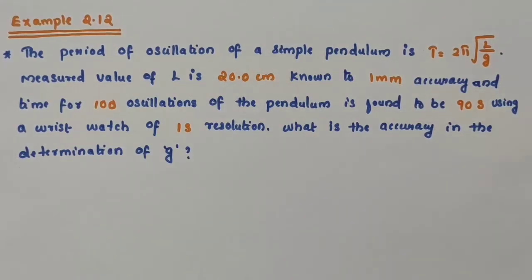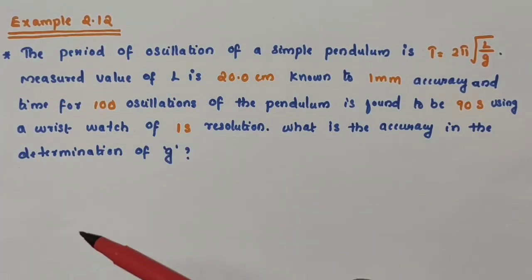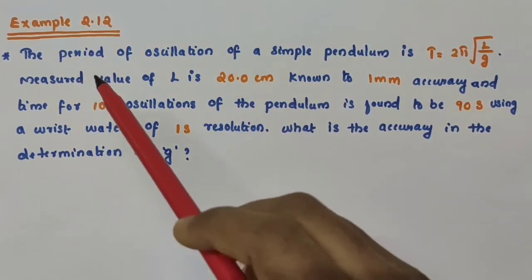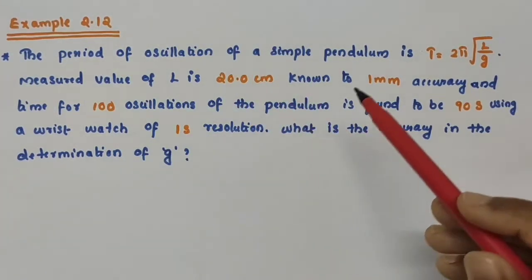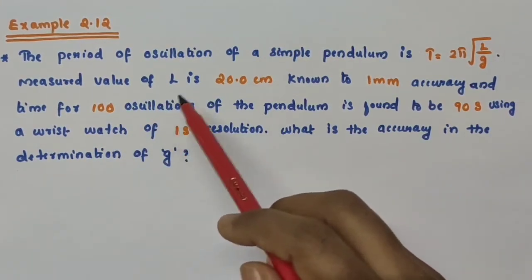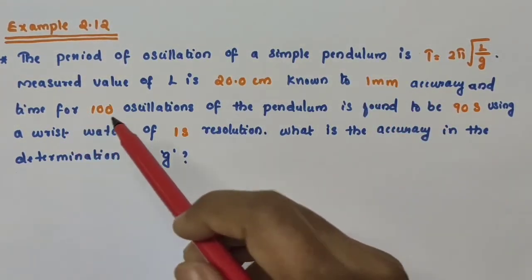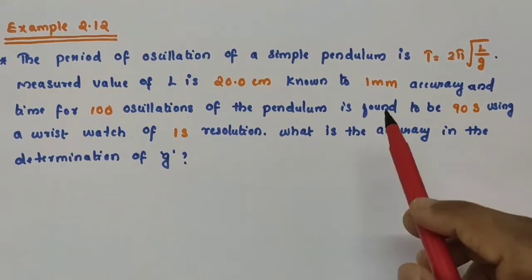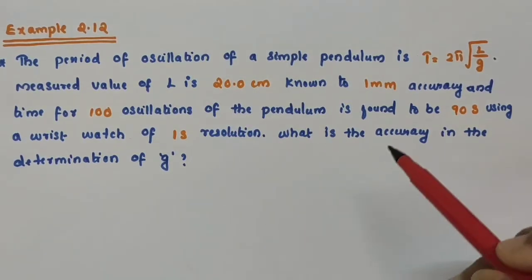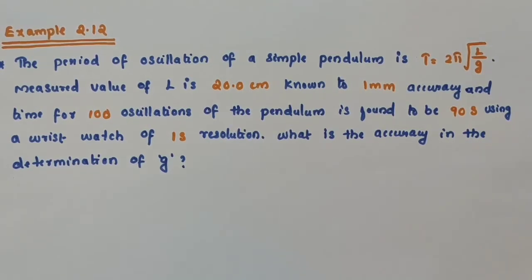Hello everyone. In this video we are going to discuss example 2.12 of class 11 physics from chapter 2, units and measurements. The question is: the period of oscillation of a simple pendulum is T = 2π√(L/g). The measured value of length L is 20.0 cm with 1 mm accuracy, and the time for 100 oscillations of the pendulum is found to be 90 seconds using a wristwatch of 1 second resolution. What is the accuracy in the determination of acceleration due to gravity g?